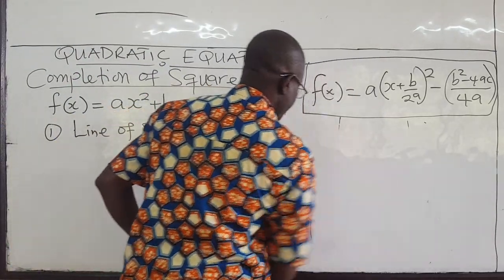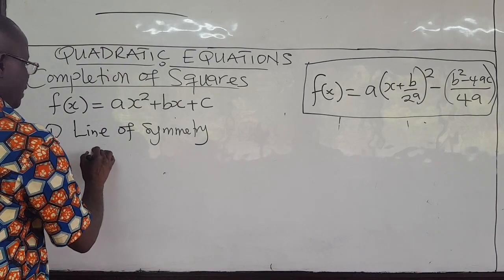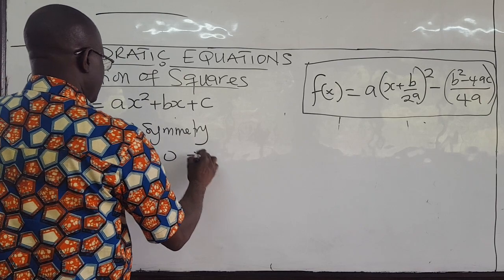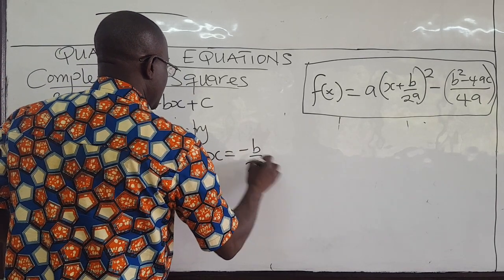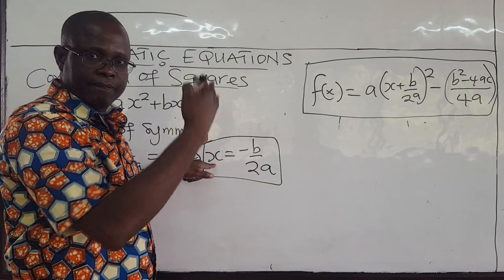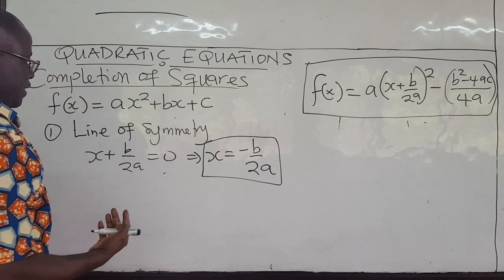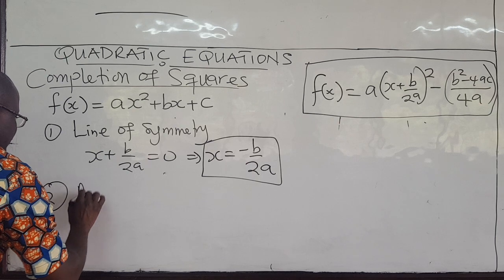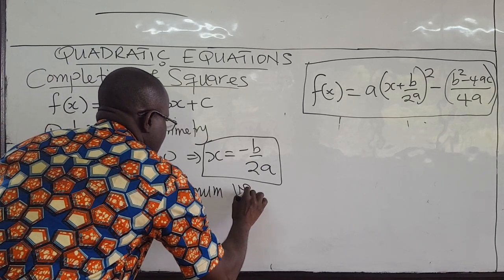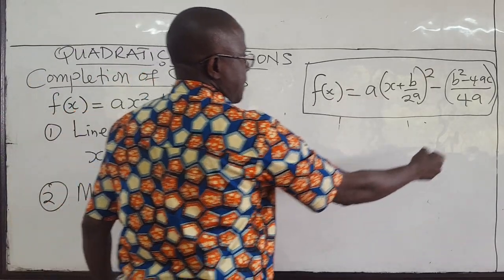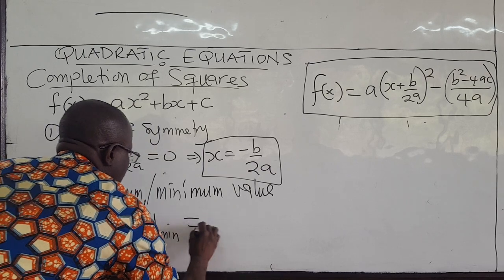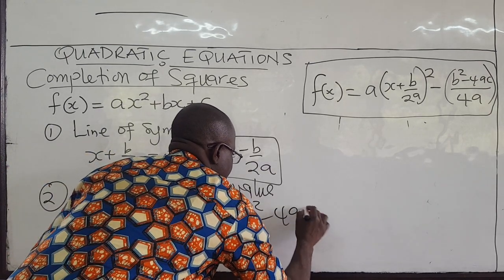The line of symmetry is obtained by equating x plus b over 2a to zero, which gives x equals negative b over 2a. So once you're given the quadratic function with known a, b, and c, you substitute to get the line of symmetry. You can also obtain the maximum or minimum value of the function, which is given by negative b squared minus 4ac all over 4a.